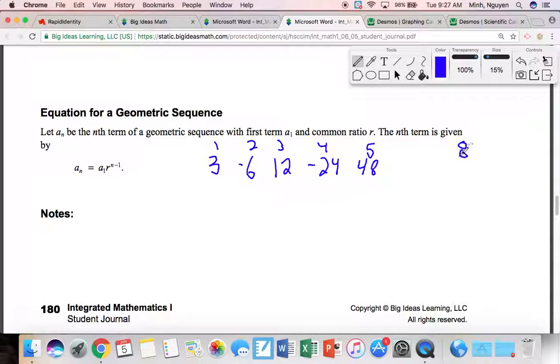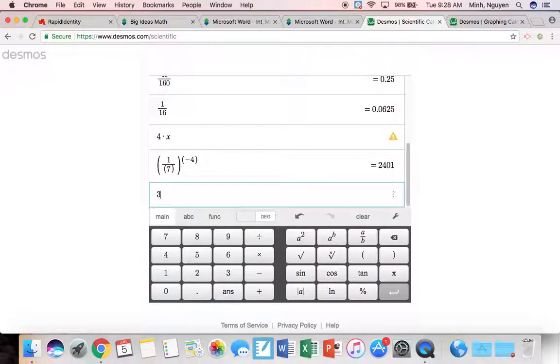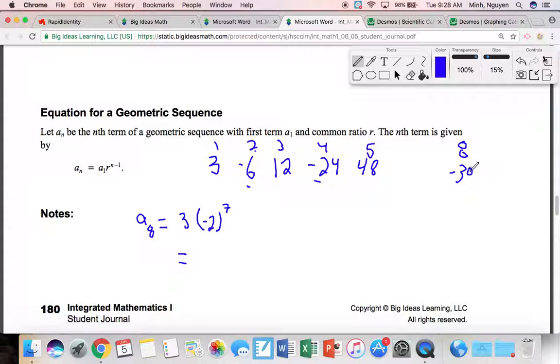Let's say I want to find the eighth number. So it seems that every even one is going to be negative. You could basically guarantee this is going to be negative. The eighth a is the first a, or three, times the common ratio is negative 2, times n, or 8, minus 1, or 7. So we have 3 times negative 2 to the seventh power. Let's use a scientific calculator for this. 3 times negative 2 to the seventh power. Negative 384.